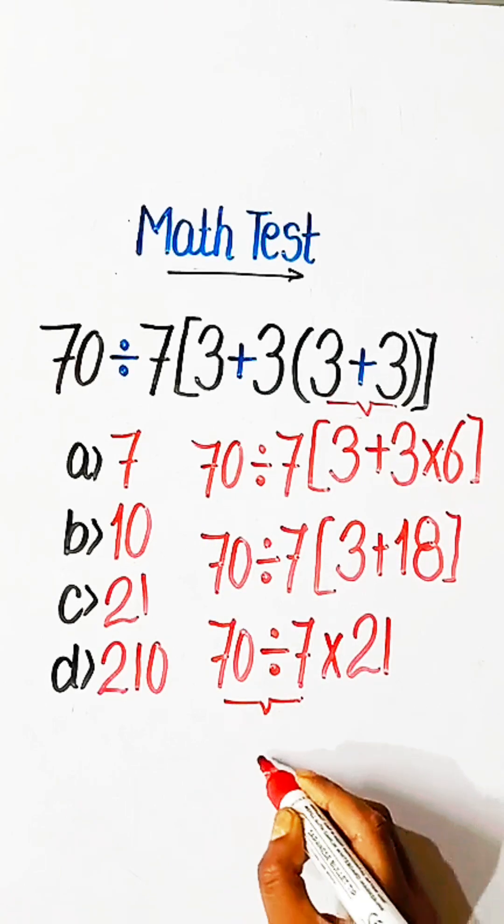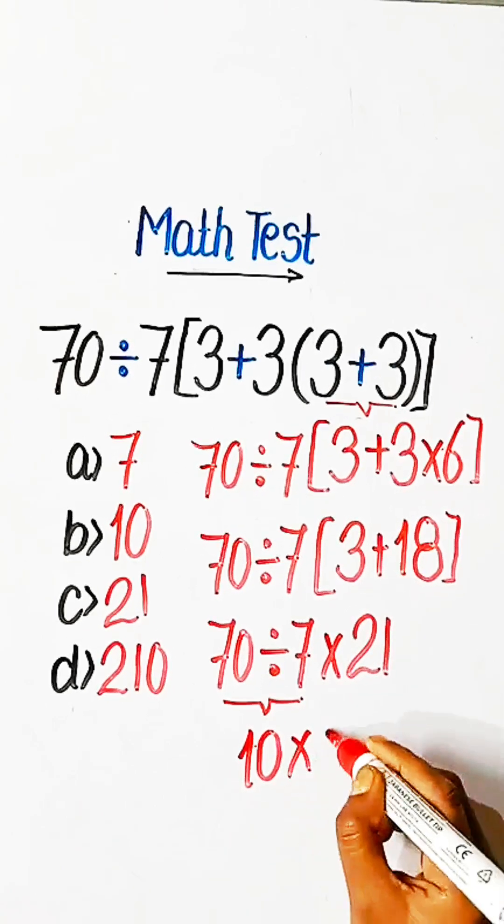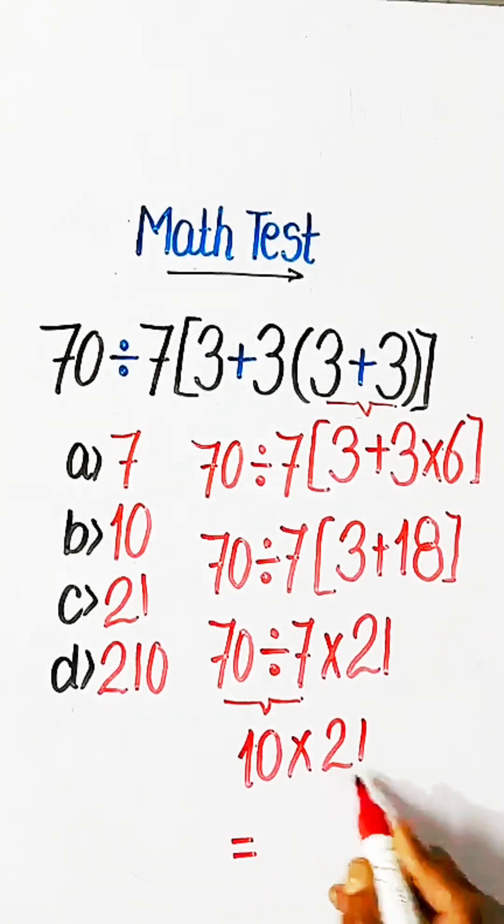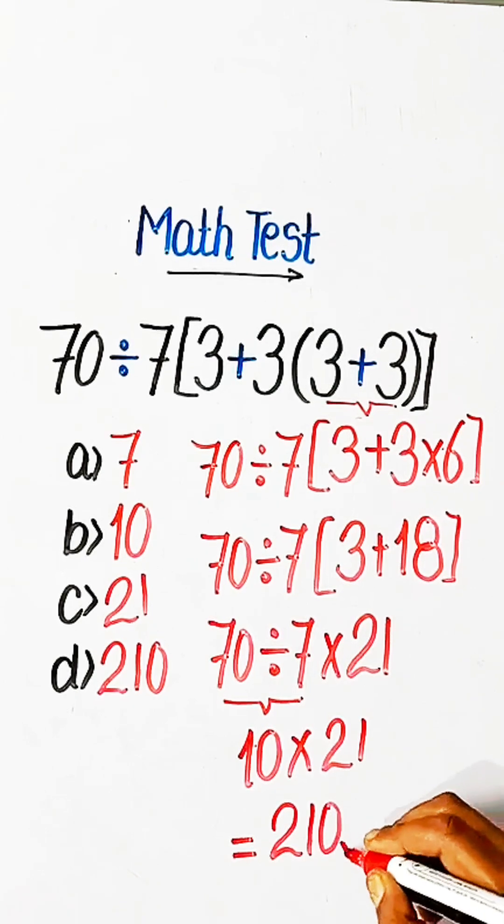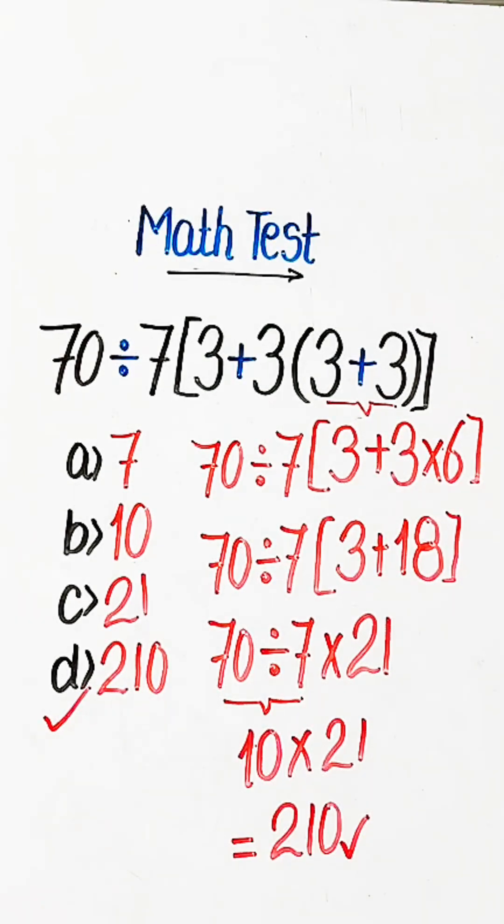70 divided by 7 equals 10, multiplied by 21, so 210 will be our correct answer. Option d will be the right one.